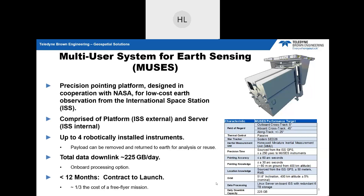One benefit of the MUSES platform is that we can robotically install hosted payloads. From a data downlink standpoint, we can downlink around 225 gigabytes of imaging data per day. We also have onboard processing options on the server, pointing control algorithms for targeting and acquiring imagery, and we advertise contract to launch in less than 12 months. The MUSES platform costs about a third of a free flyer satellite.